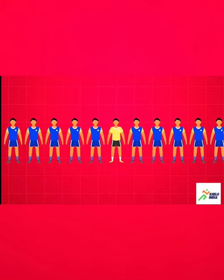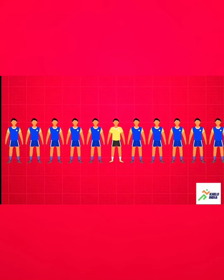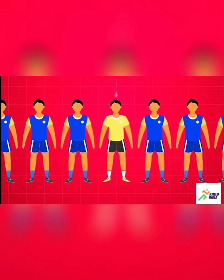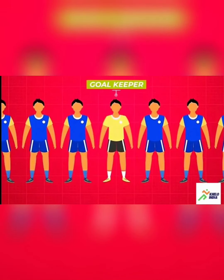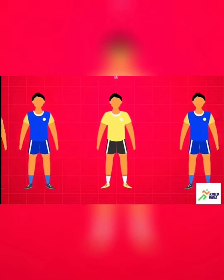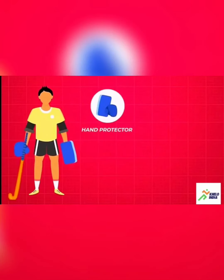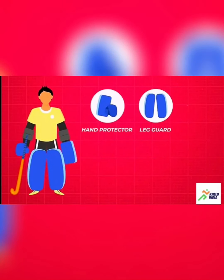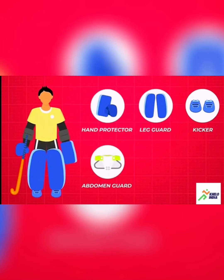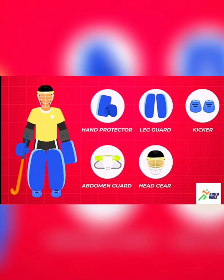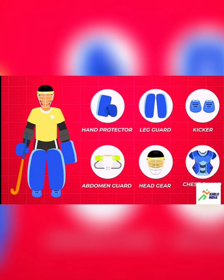In one team, all the players except the goalkeeper wear the same color jersey. A goalkeeper wears a different color shirt and wears equipment such as hand protector, leg guard, kicker, abdomen guard, headgear, and chest guard.